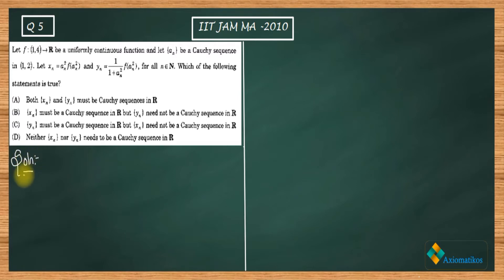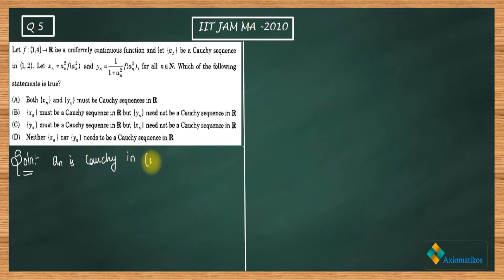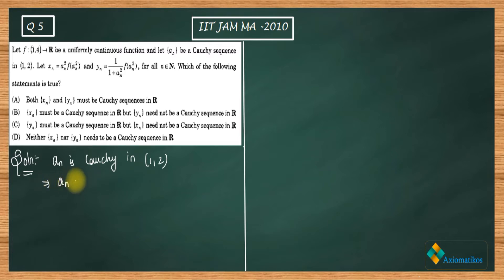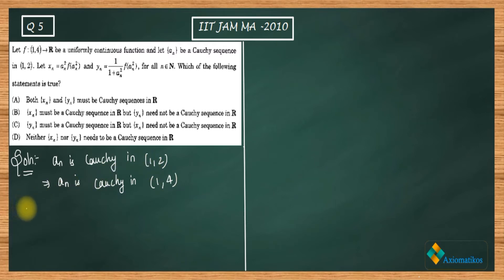Now in the solution, the first thing given is that {an} is a Cauchy sequence inside the subset (1, 2) of ℝ. Since {an} is Cauchy inside this set, that means {an} is also a Cauchy sequence in its superset ℝ.